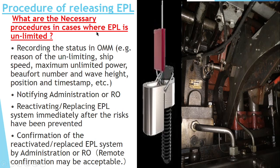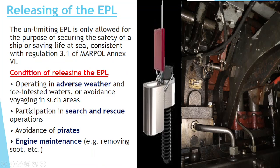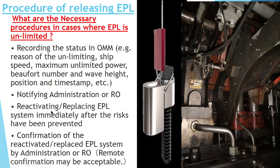What are the necessary procedures in case where EPL is unlocked? First, recording the status in the Onboard Management Manual. After that, we have to notify the administration. After the requirement is finished — like if we have done it for the avoidance of pirates — after we have crossed the pirate area, we have to again lock the EPL and reactivate it. Then confirm the same to the administration. The administration need not be present every time the EPL is reactivated — only notifying them when we are unlocking and locking, so that the record is maintained and it is certified by the administration.